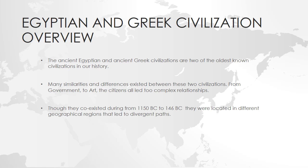The Egyptian civilization was based in the eastern part of North Africa and is believed to have started around 3150 B.C. and continued until the end of the Pharaoh rule in 31 B.C. The ancient Greek civilization is believed to have been in effect from 1100 B.C. until about 146 B.C. Though they coexisted during the same times, they were located in different geographical regions that left two divergent paths.